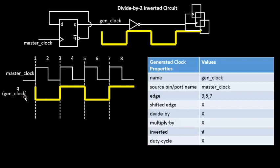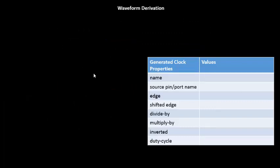Since we have learned about edge characteristics, divided-by characteristics, and inverted characteristics of the generated clock, what we'll do in the next video is give you the properties and ask you to derive the waveform from those properties. Thank you.